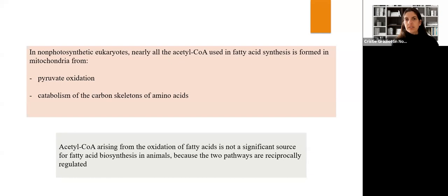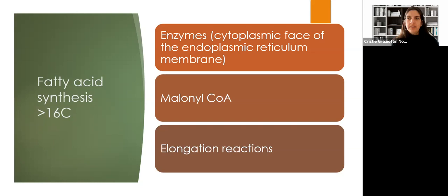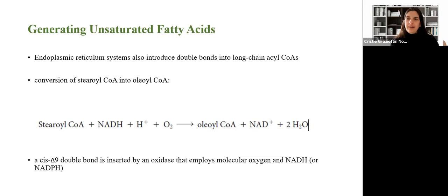In non-photosynthetic eukaryotes, nearly all the acetyl-CoA used in fatty acid synthesis is formed in mitochondria from pyruvate oxidation and catabolism of carbon skeletons of amino acids. Acetyl-CoA arising from oxidation of fatty acids is not a significant source for fatty acid biosynthesis in animals, because these pathways are reciprocally regulated. If we want a fatty acid with 18 carbons instead of 16, we need enzymes in the cytoplasmic face of the endoplasmic reticulum membrane, malonyl-CoA, and elongation reactions.